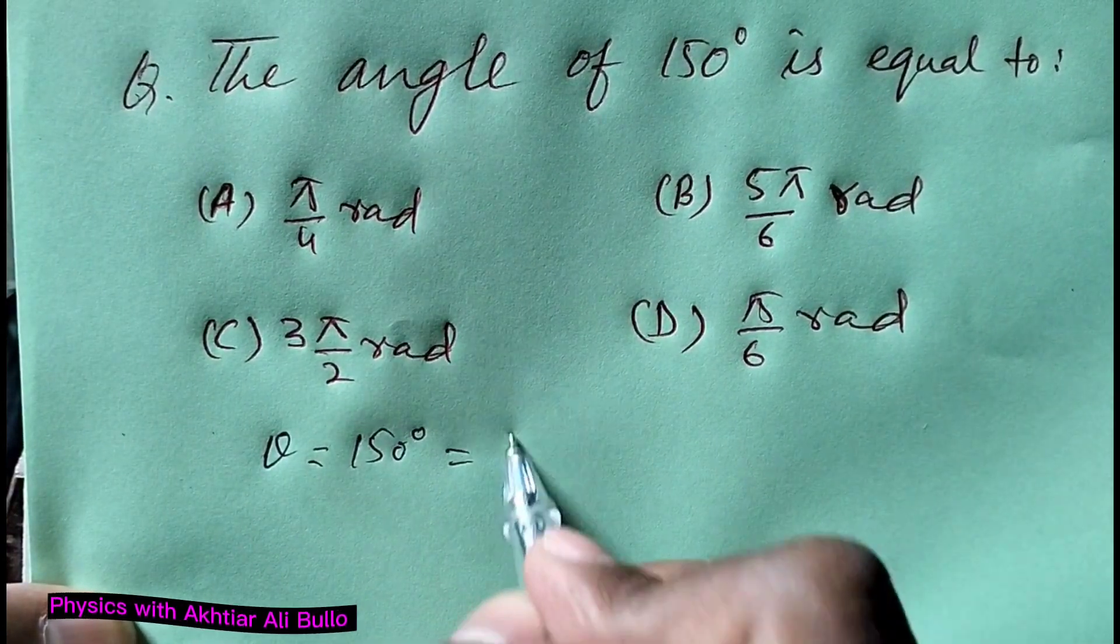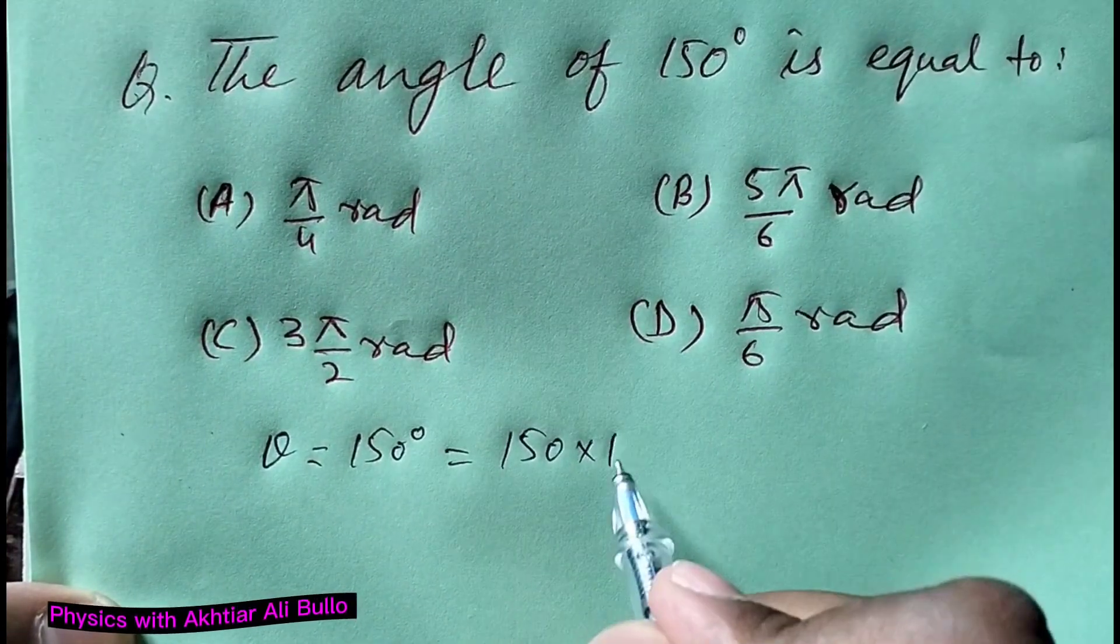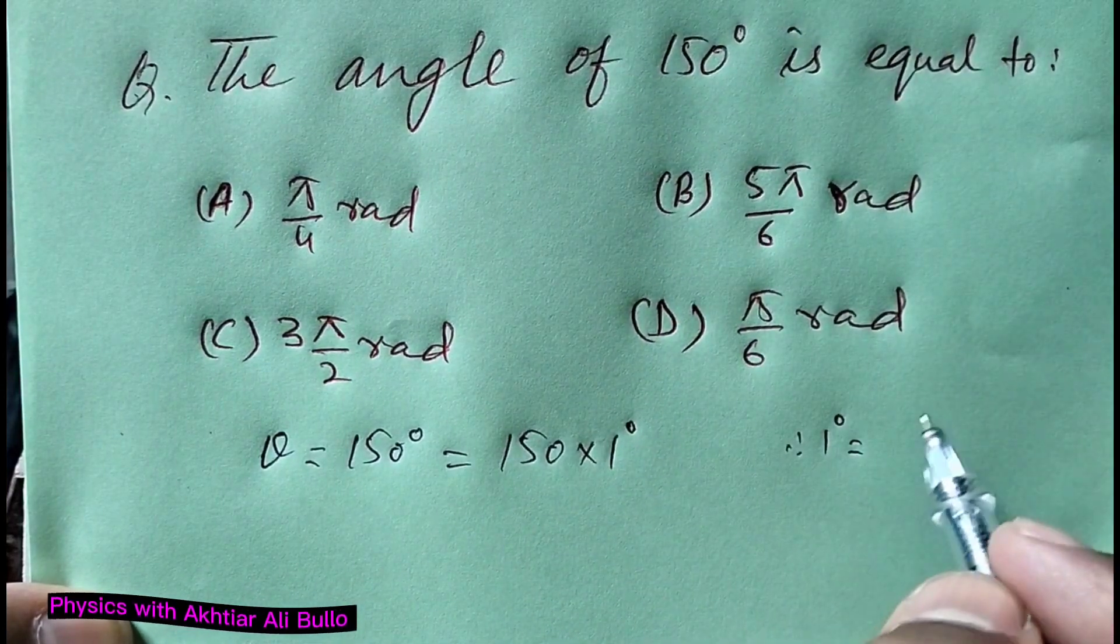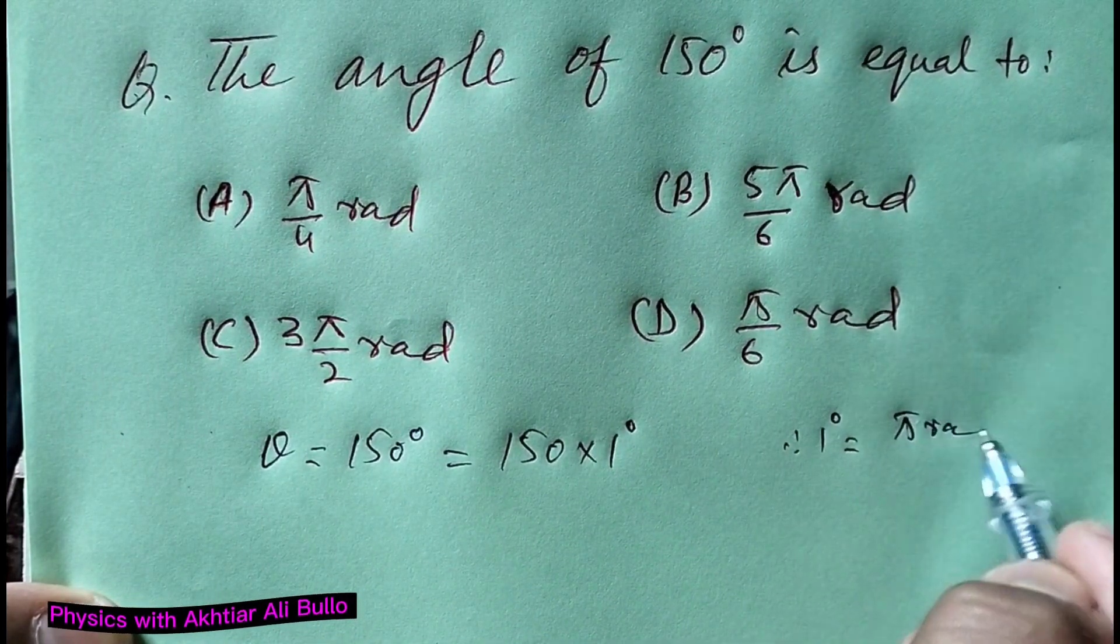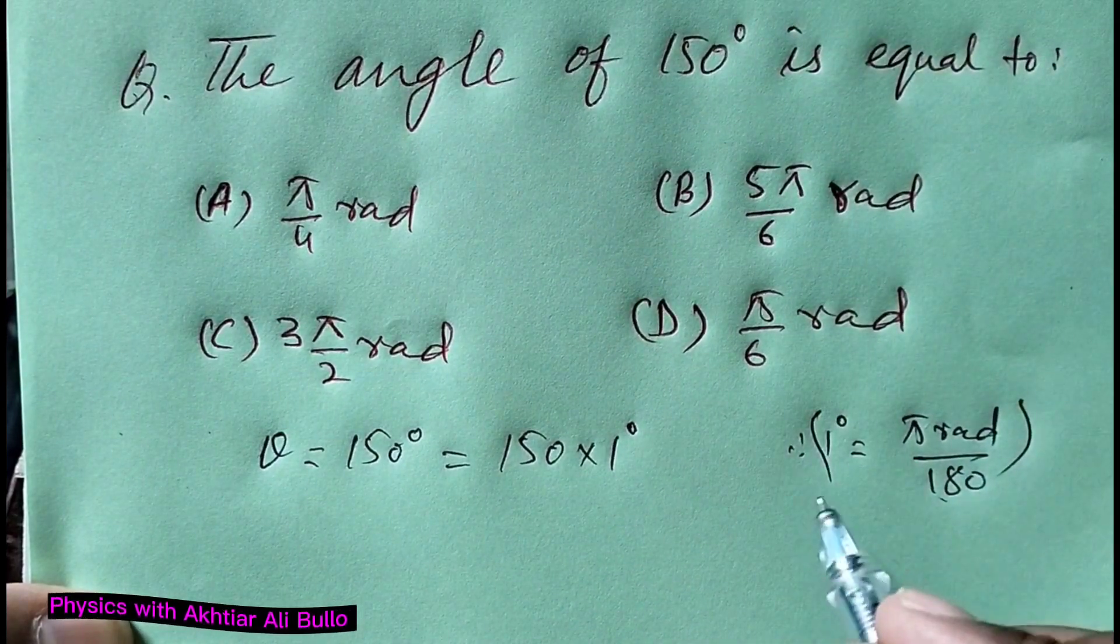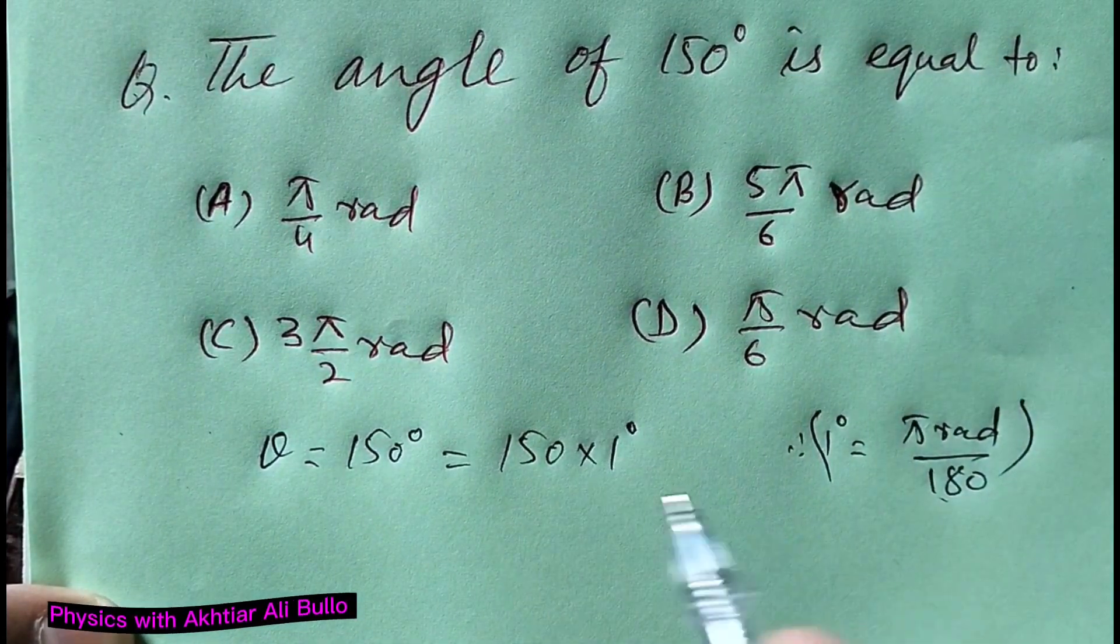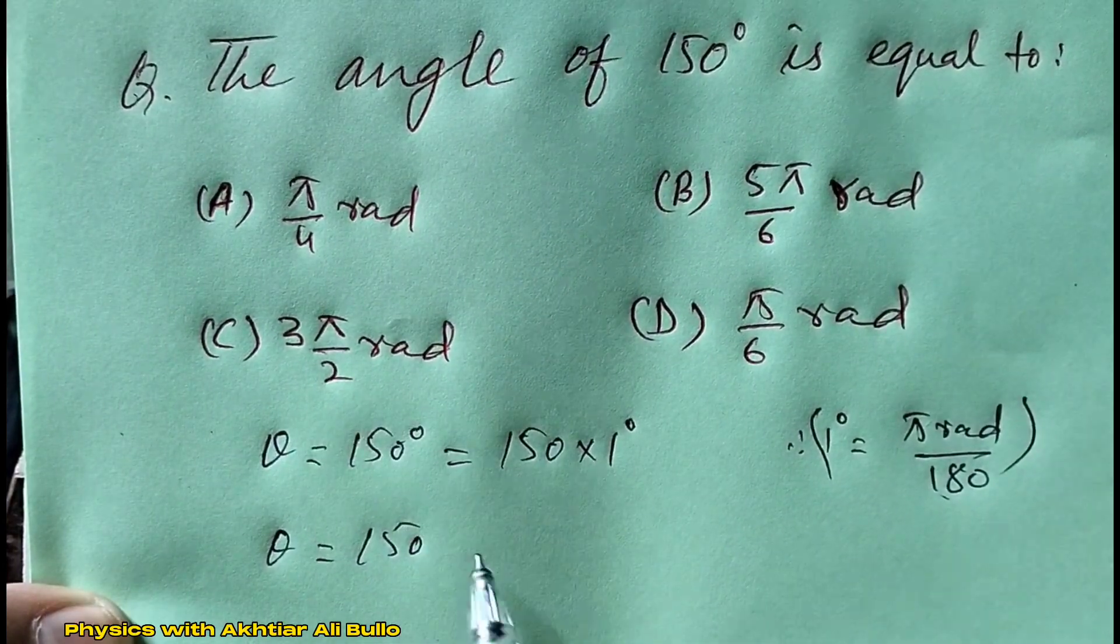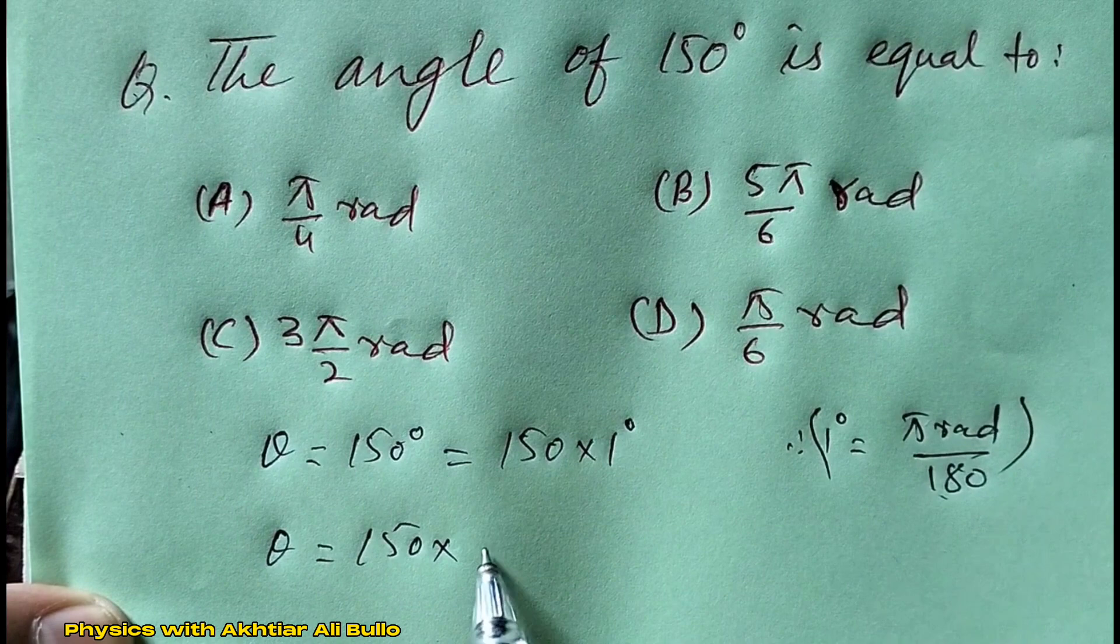We can write this as 150 times 1 degree. Since 1 degree equals π radian upon 180, by substituting this value in place of 1 degree, theta will equal 150 times π radian upon 180.